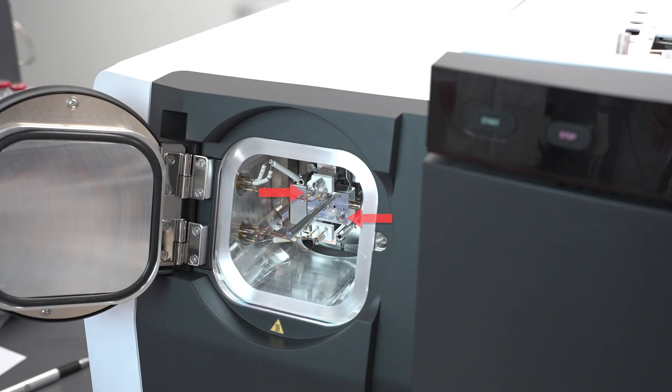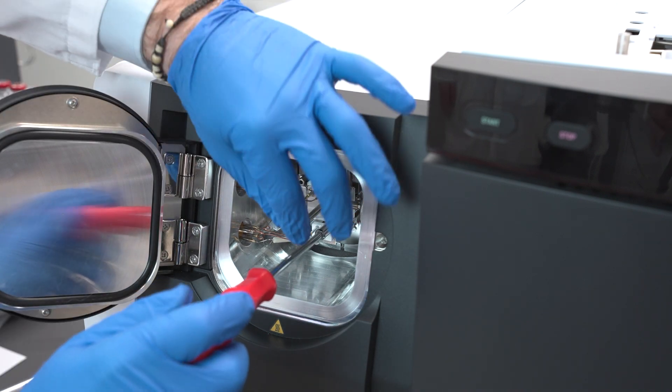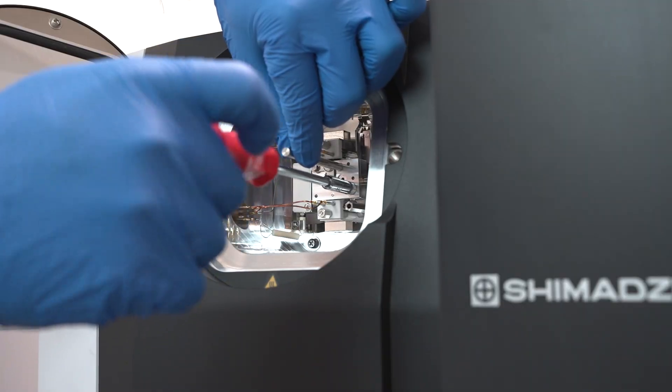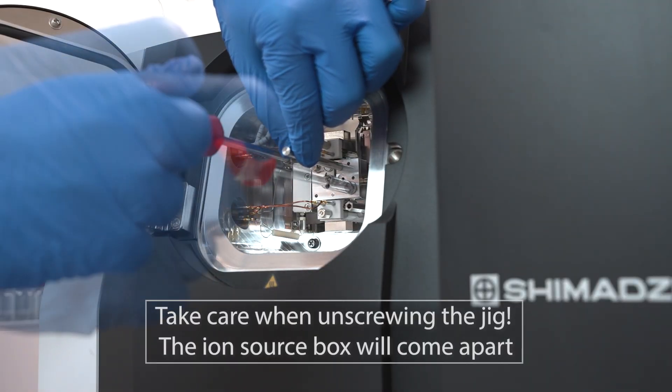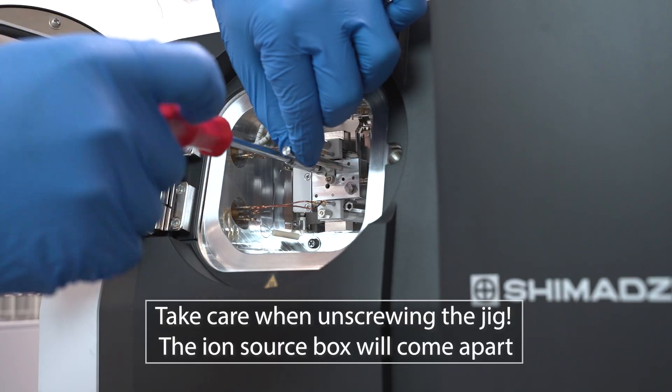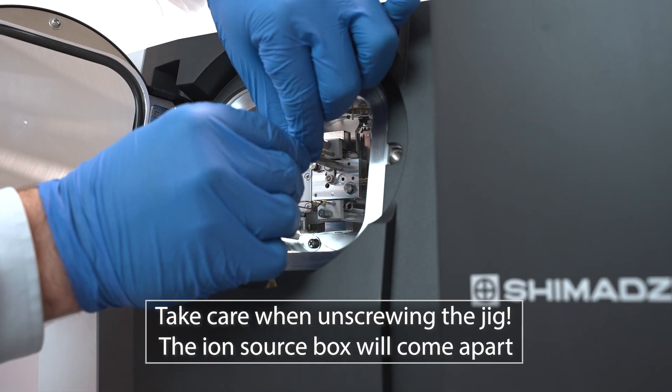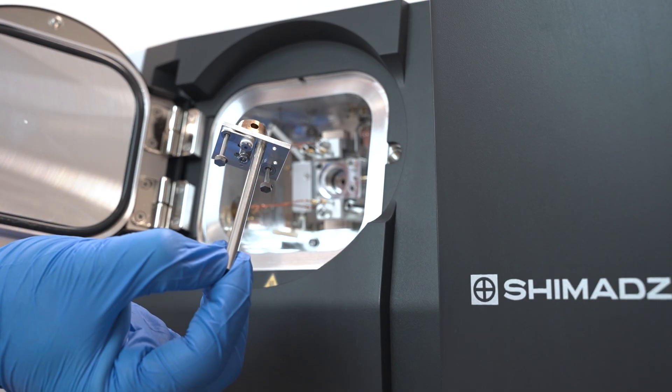Next, loosen the two screws with the socket wrench. Be careful to hold onto the jig as you loosen the last screw. Simply pull the jig and the ion source directly toward yourself and out of the instrument.